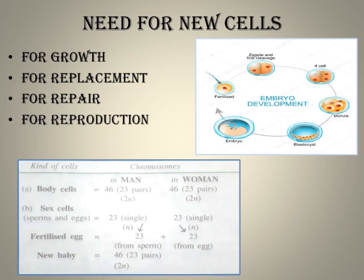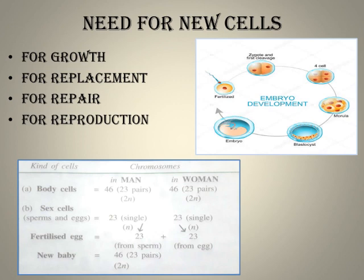The next reason we need new cells is for replacement. There is always wear and tear of cells during normal body functions. For example, two million red blood cells in our body are destroyed every second. These need to be replaced, otherwise our body will not be able to carry the oxygen required for normal functioning. New cells are formed through division of parent cells in the bone marrow.